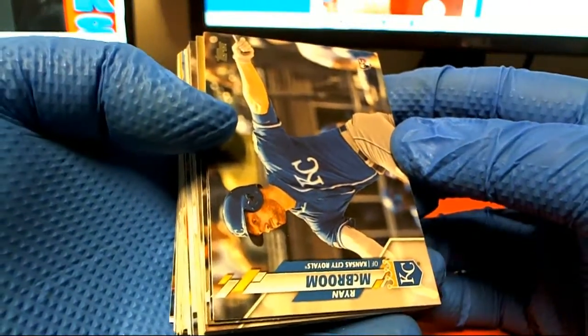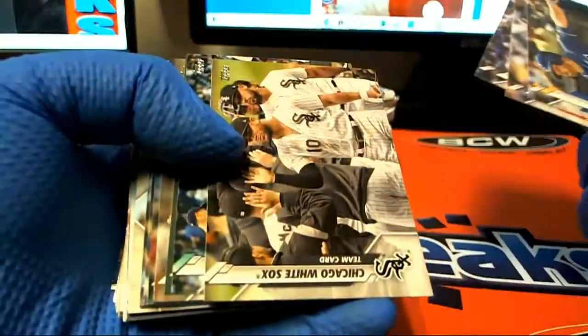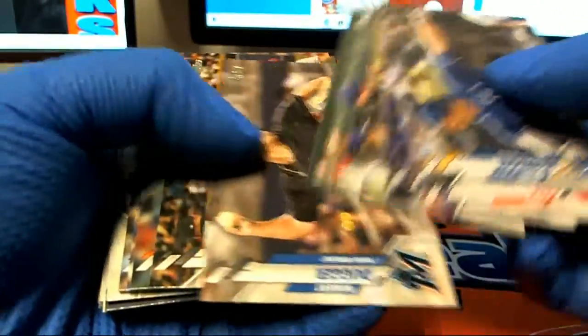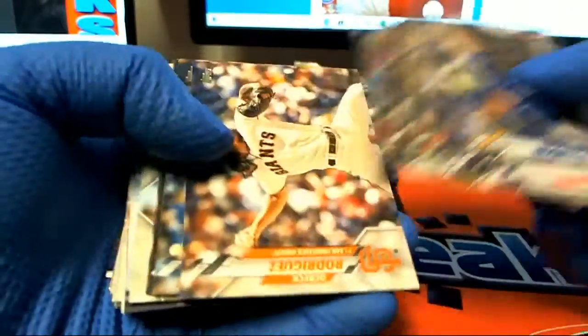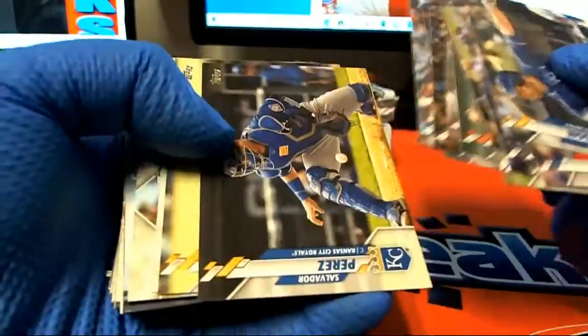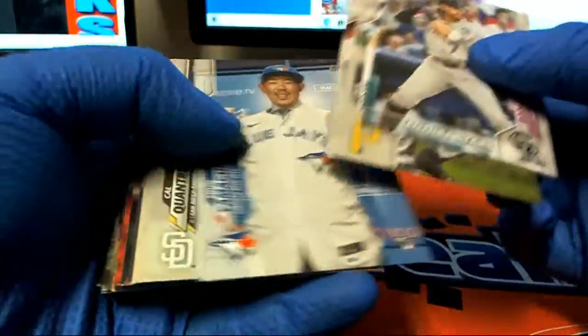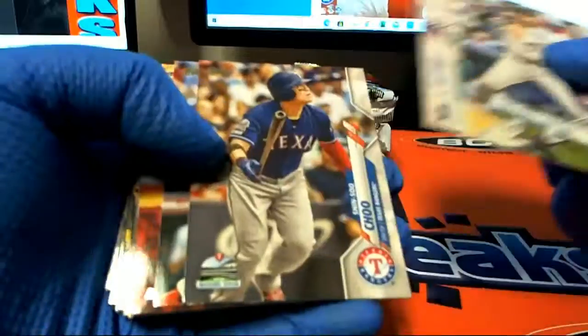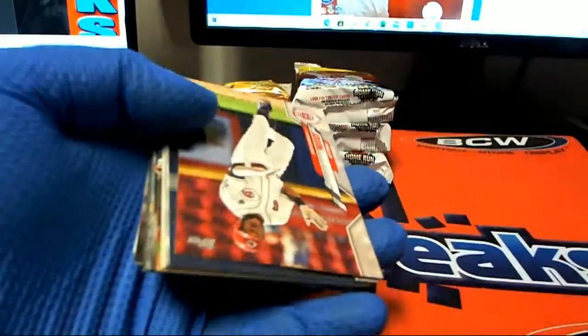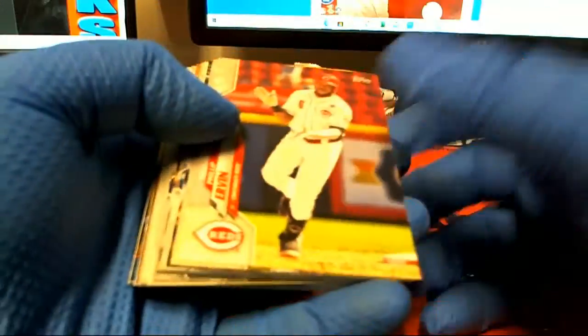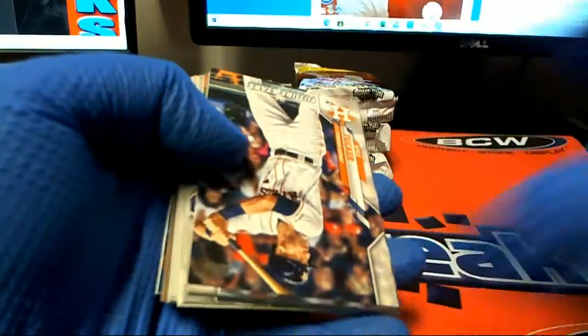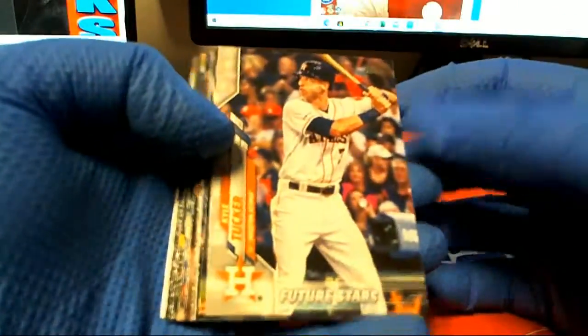Ryan McBroom. Perez, alright this is Mark S's packs here, he bought six. Nice Choi. Nice Tucker.